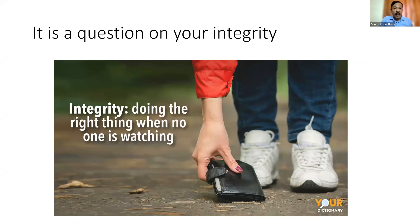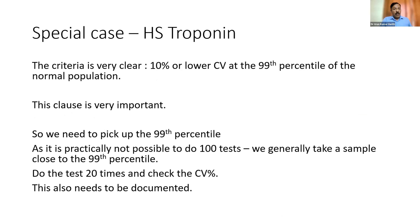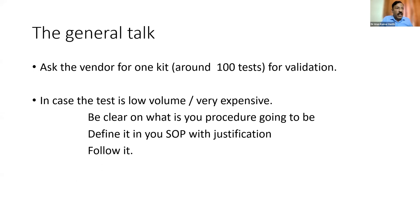Your final method verification package should include an SOP, clear definition of what you were trying to do, clear identification of who will do it, raw data accepted as-is, and testing of precision, accuracy, linearity, and biological reference range. For HS troponin, the criterion is clear: at the 99th percentile of the normal population, you must demonstrate a CV of 10%. Simple mathematics shows the total number of tests involved in a method verification comes to about 100 to 120.